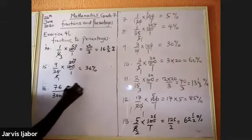Now here you just cancel the zero straight. You are left with 76 over 3. 3 into 7 gives 2 remainder 1; bring down to get 16; 3 into 16 gives 5 remainder 1; so that is 25 and one-third percent. With that, we are done with Exercise 4L.